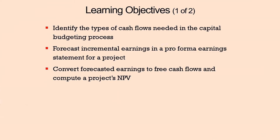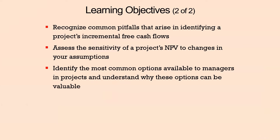The learning objectives are: identify the types of cash flows needed in the capital budgeting process; forecast incremental earnings in a pro-forma earnings statement for a project; convert forecasted earnings to free cash flows and compute a project's NPV. Recognize common pitfalls that arise in identifying a project's incremental free cash flows. Assess the sensitivity of a project's NPV to changes in your assumptions. And identify the most common options available to managers in projects and understand why these options can be valuable.